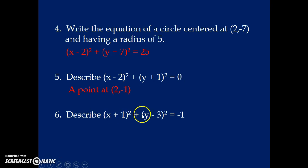And now we describe this equation, (X + 1)² + (Y - 3)² = -1. Well, we're not going to have a radius that is a negative value. So there is actually no equation here. There's no graph that we can graph that would have a radius of negative 1. It doesn't have any meaning when we talk about the equation of a circle.